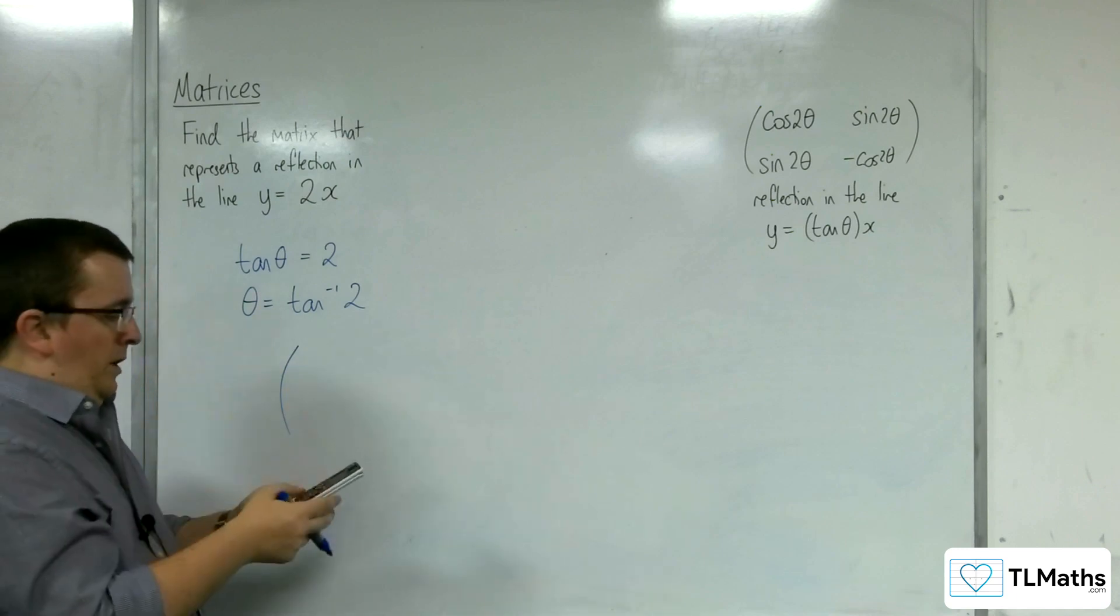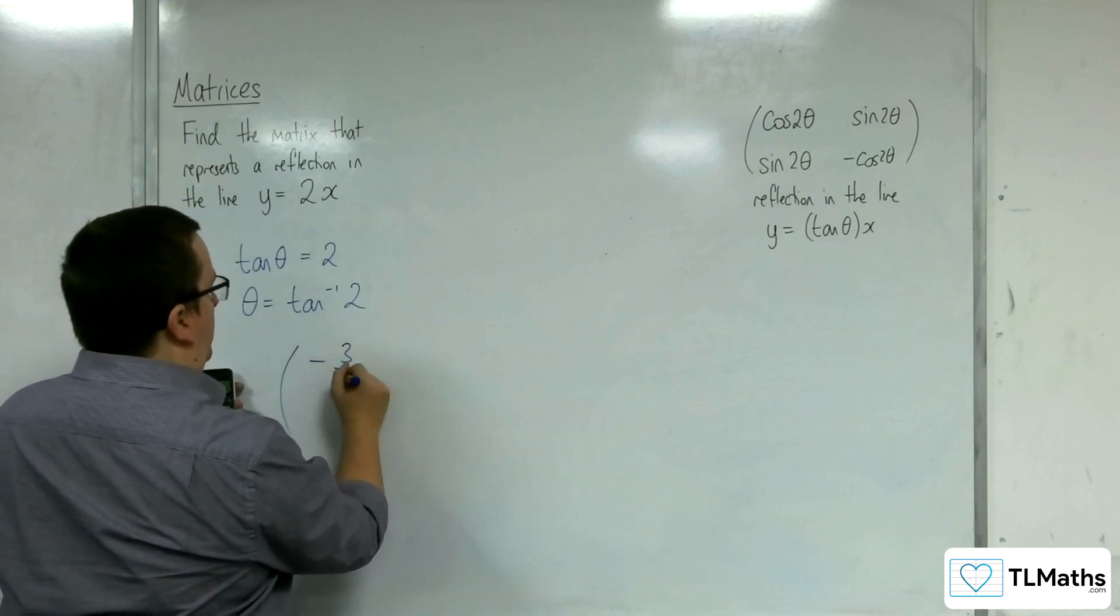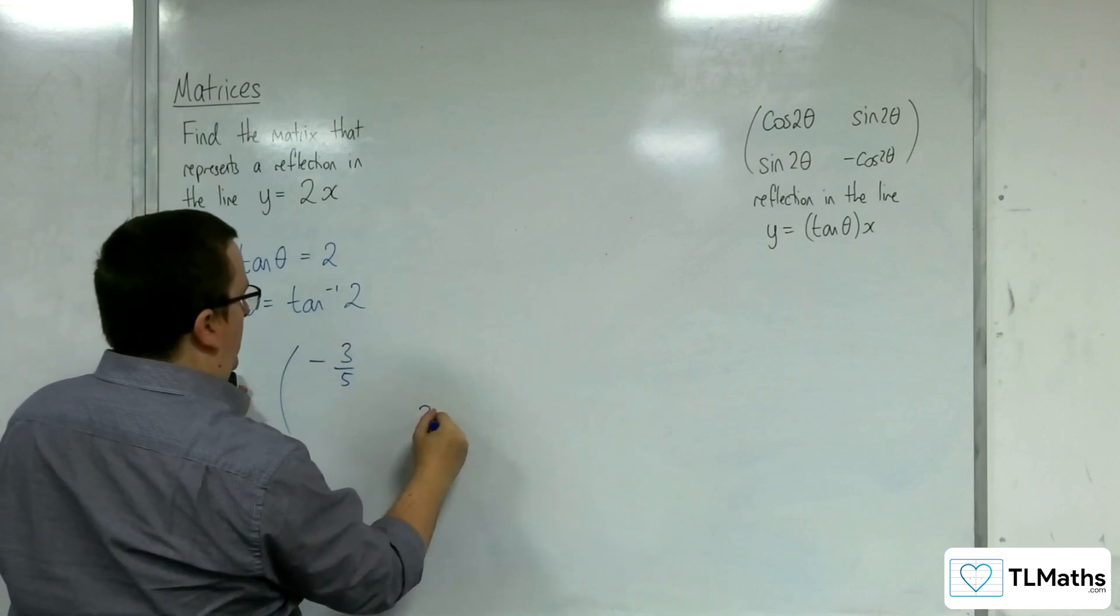So cosine of 2 times that answer is minus 3 fifths. So that's minus 3 fifths. That's going to be 3 fifths.